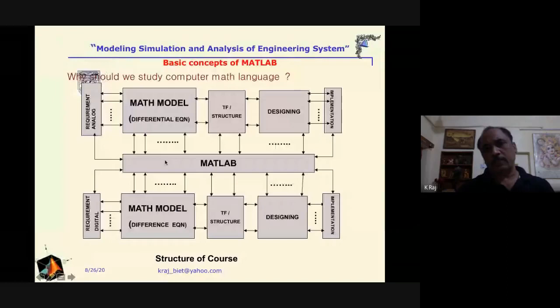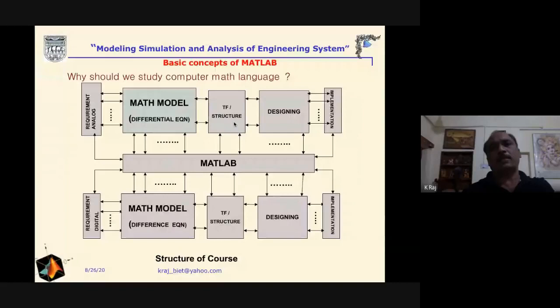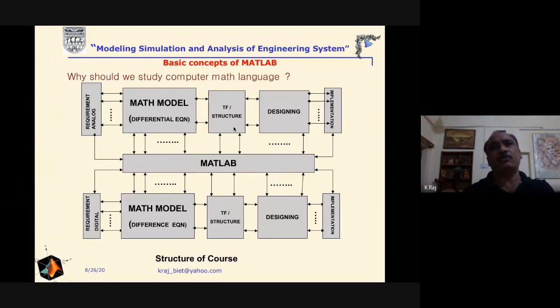First we will develop the mathematical equations — these may be differential equations or difference equations. From those equations we have to derive the transfer function. The transfer function is derived by taking the Laplace transformation or the Z-transformation, giving us the ratio of the transformed output to the transformed input with all initial conditions considered to be zero.